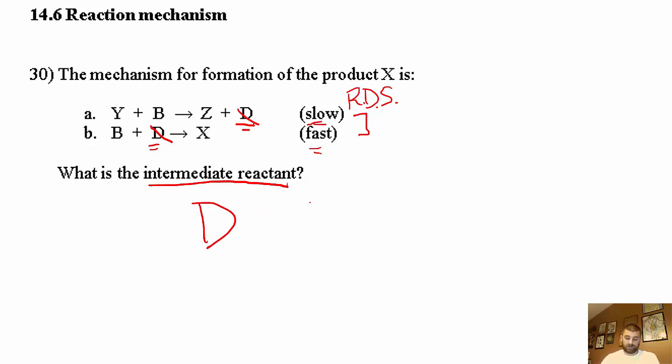Because it's on the left side and on the right side, we know that is our intermediate. It's the product of one step and then the reactant for another one.